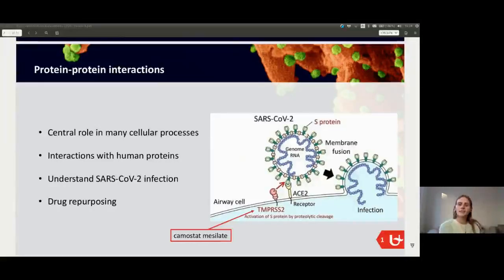So by studying protein-protein interactions between virus proteins and human proteins we can discover these types of mechanisms and these are interesting places to intervene. And this is where drug repurposing comes into play because a lot of established drugs already exist that target human proteins. For example, camostat mesylate is an inhibitor of TMPRSS2 and if we use that the SARS-CoV-2 infection could be partially blocked.